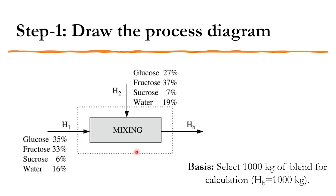Looking at the diagram: H1 and H2 with those compositions are mixed to produce blend Hb. We start with an assumption — since there are too many unknowns, we select 1000 kg of blend for calculation. So Hb = 1000 kg is known, and we calculate H1, H2, and the composition of the blend. The overall balance and component balances are applied, and there are four components: glucose, fructose, sucrose, and water.